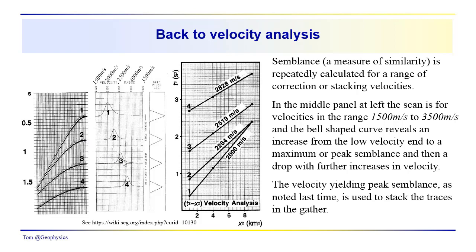We go through this scanning process, go through these different velocities. We see practically zero semblance begins to rise as we begin to get some constructive interference in the summation, and then it reaches a peak and then drops off again.